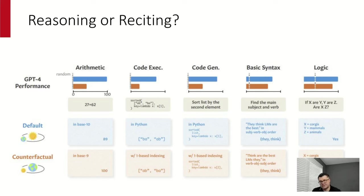The second method — I believe it's called 'least-to-most' — is also prompt-based, but here rather than the human articulating the chain of reasoning, you use the large language model to decompose more complex questions into sub-pieces. Once decomposed, you ask the model to solve those sub-parts sequentially to arrive at an answer. The authors report a significant improvement over chain-of-thought prompting.